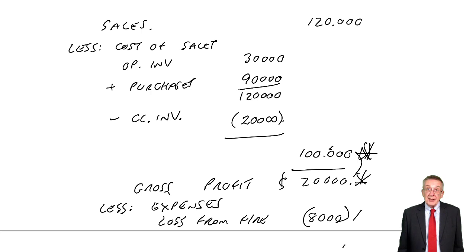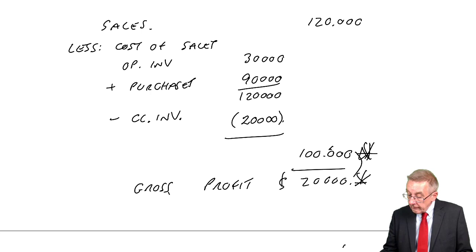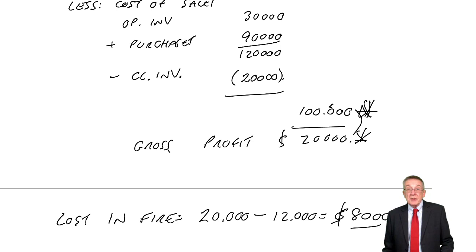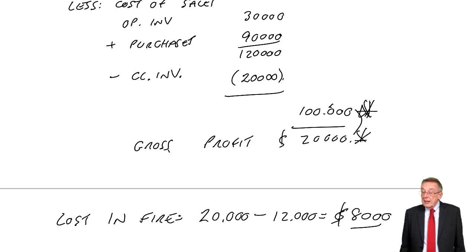However, that's a minor point. In most questions, all we're concerned about is what was the loss. Work out what the inventory should have been using your markup or your margin, whichever you're given. Compare with what the inventory actually was. The difference is what we have lost.